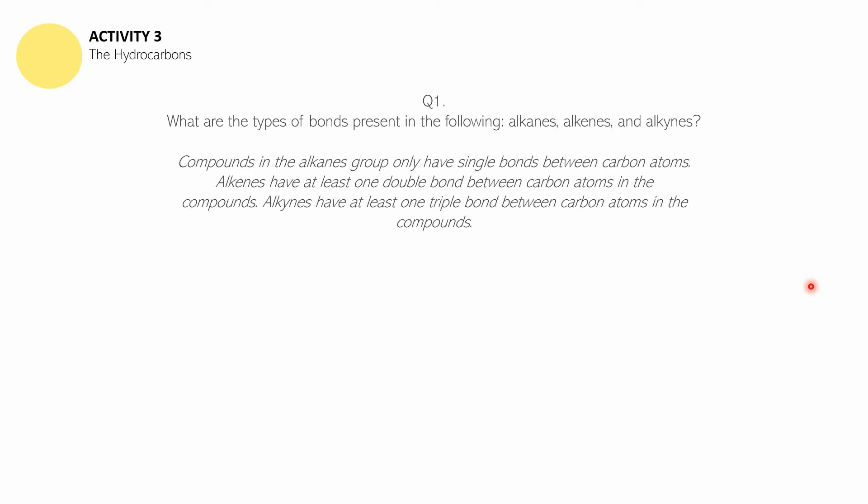The answer to question number one: Compounds in the alkanes group only have single bonds between carbon atoms, whereas in alkenes there are double bonds between carbon atoms, and in alkynes they have at least one triple bond between carbon atoms. So: alkanes — single bonds; alkenes — double bonds; alkynes — at least one triple bond.